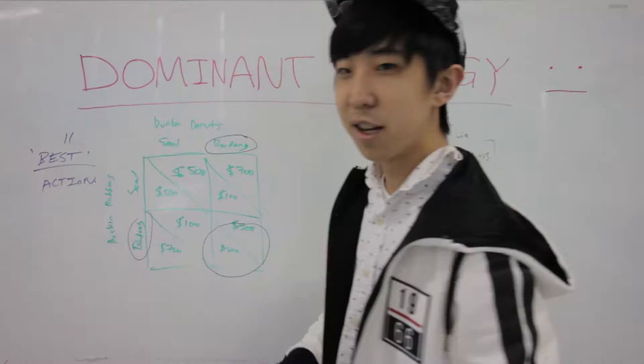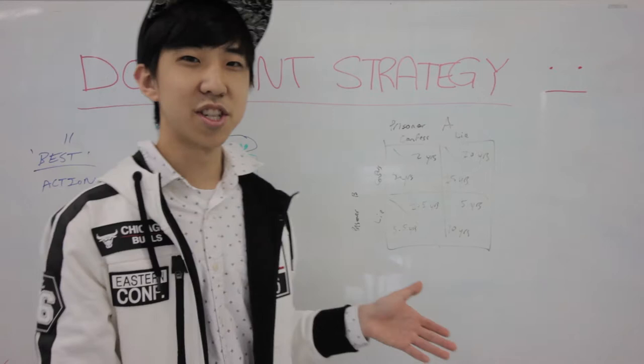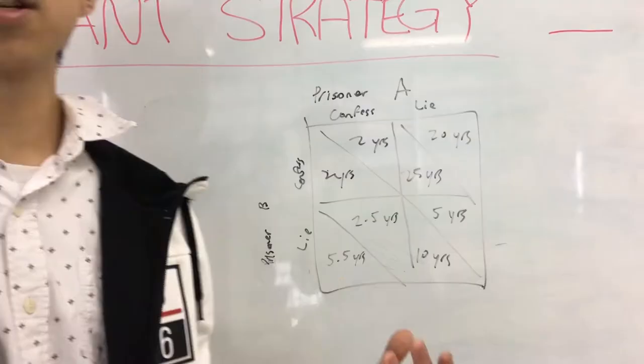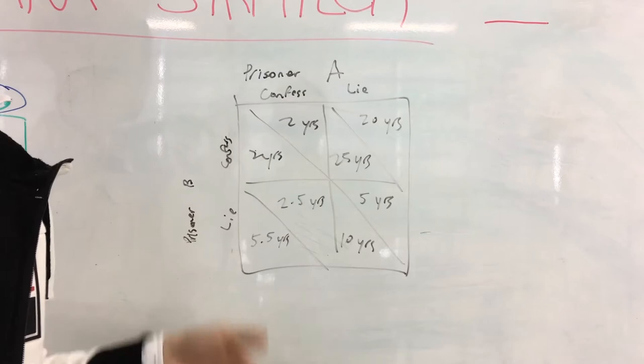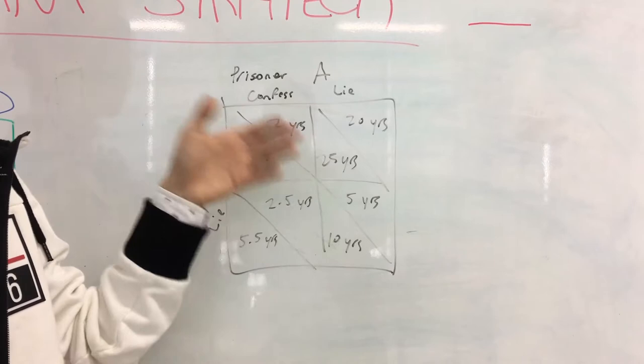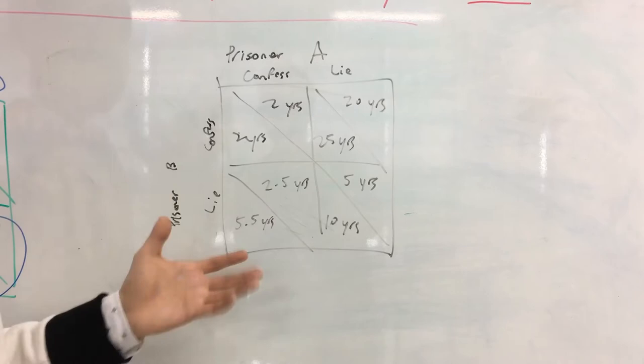Let's further explore our second example regarding prisoners. We have two prisoners — prisoner A and prisoner B — and their options are to either confess or lie. If they both decide to confess, they will each have two years in prison. If they both lie, prisoner A will have five years whereas prisoner B will have ten years. If prisoner A decides to lie and prisoner B decides to confess, they will have 20 and 25 years respectively. And finally, if prisoner A confesses whereas prisoner B lies, prisoner A will have 2.5 years whereas prisoner B will have 5.5 years.